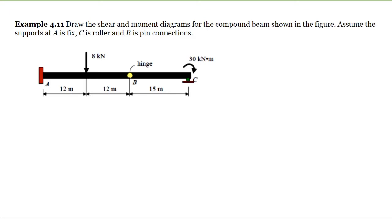We have to count the number of reactions. At point A, we have three reactions because it's fixed: AY, AX, and the moment at A. At the hinge, we have two reactions because it's an internal hinge. At C, we have one vertical reaction CY. So we have a total of six reactions.